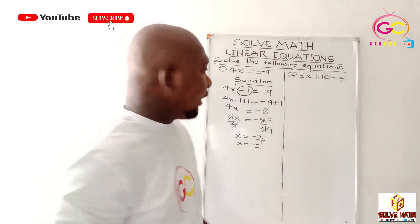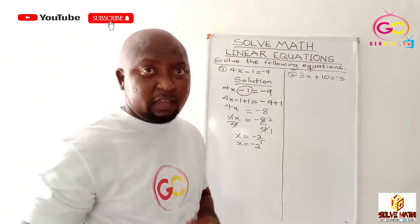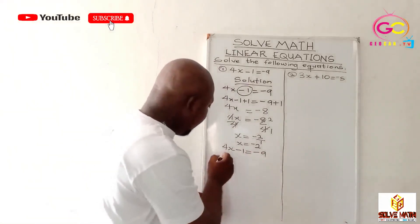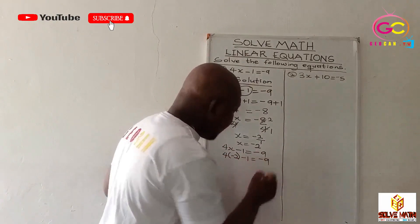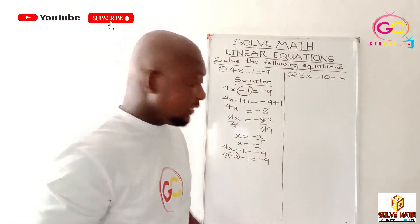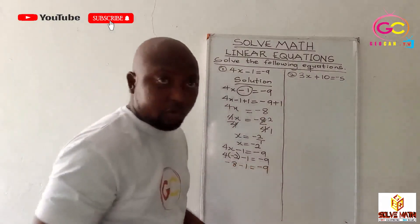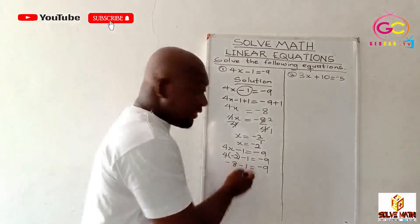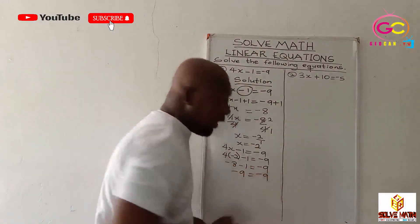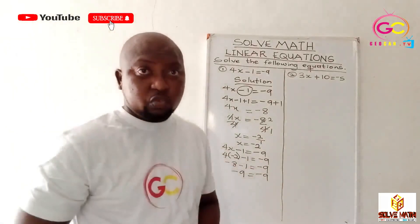We can check our answer. Go back to the question you were given — anywhere you find x, fit in negative two. If the right hand side is equal to the left hand side, then you are correct. So we have 4 times negative two, minus one, is equal to negative nine. Four times negative two — multiplying a positive with a negative gives a negative — so that's negative eight. Then negative eight minus one: you are owing eight, then you owe again one more, so it's negative nine. Negative nine equals negative nine. The right hand side is equal to the left hand side, which means our answer x is equal to negative two.